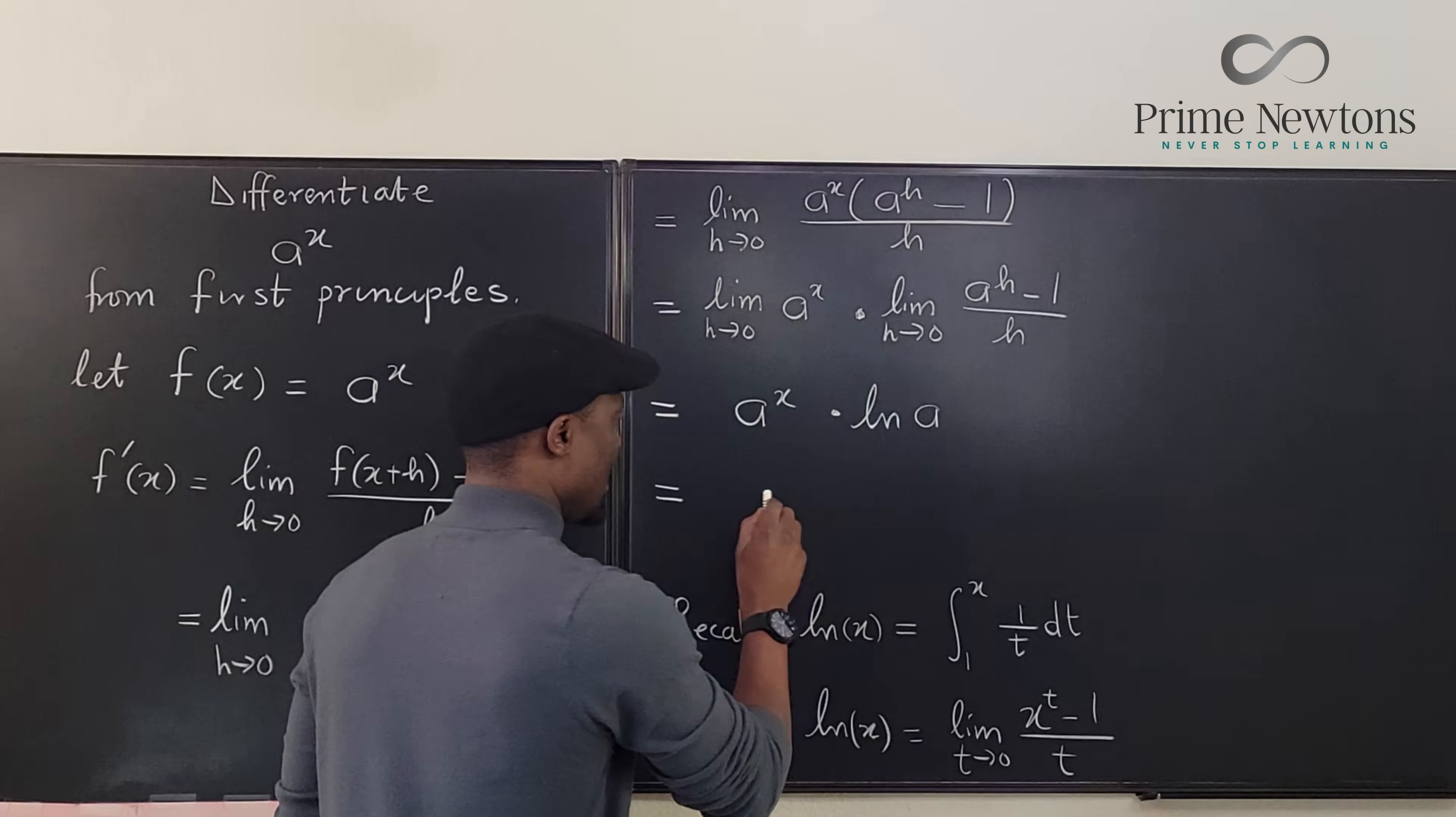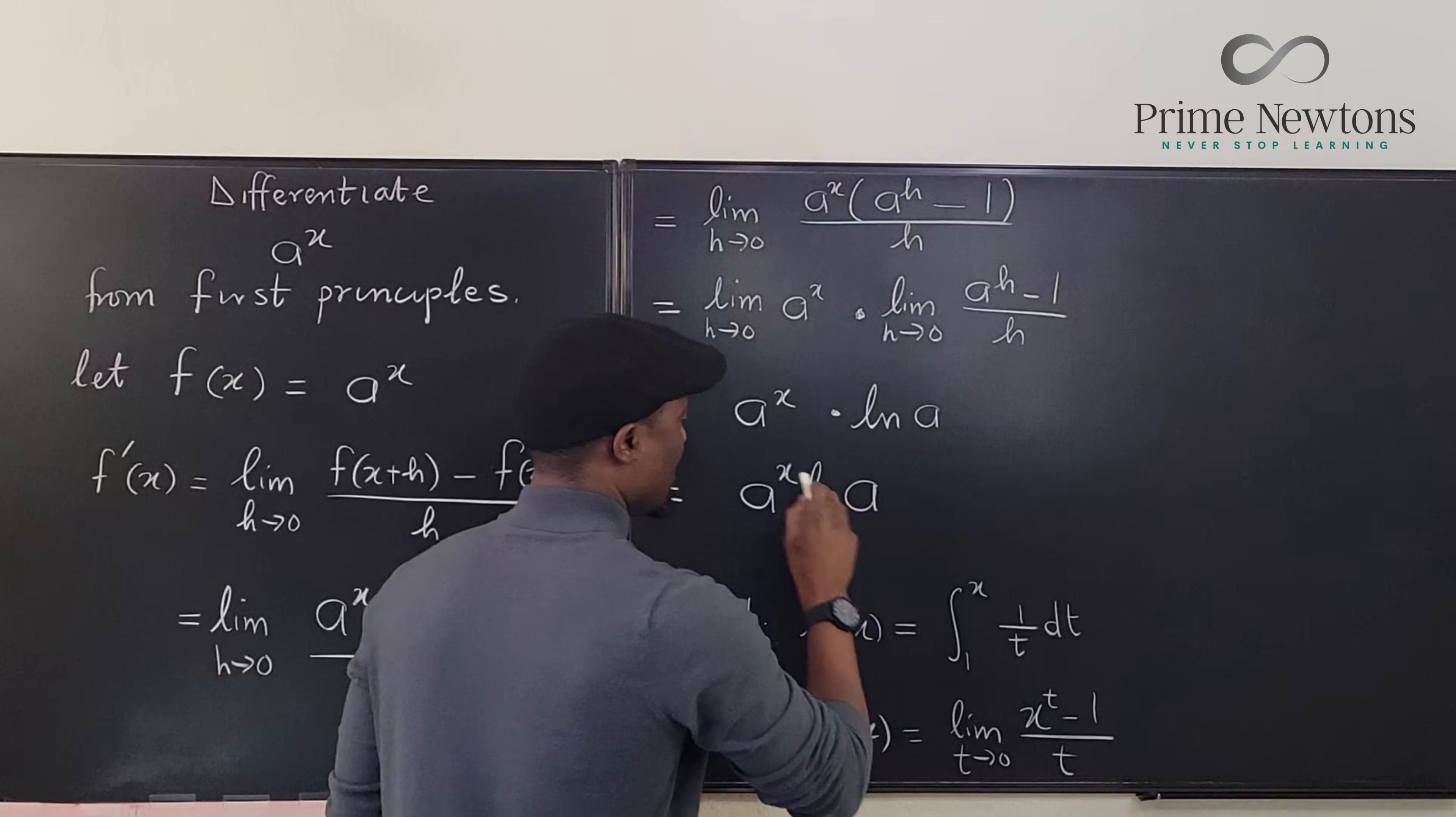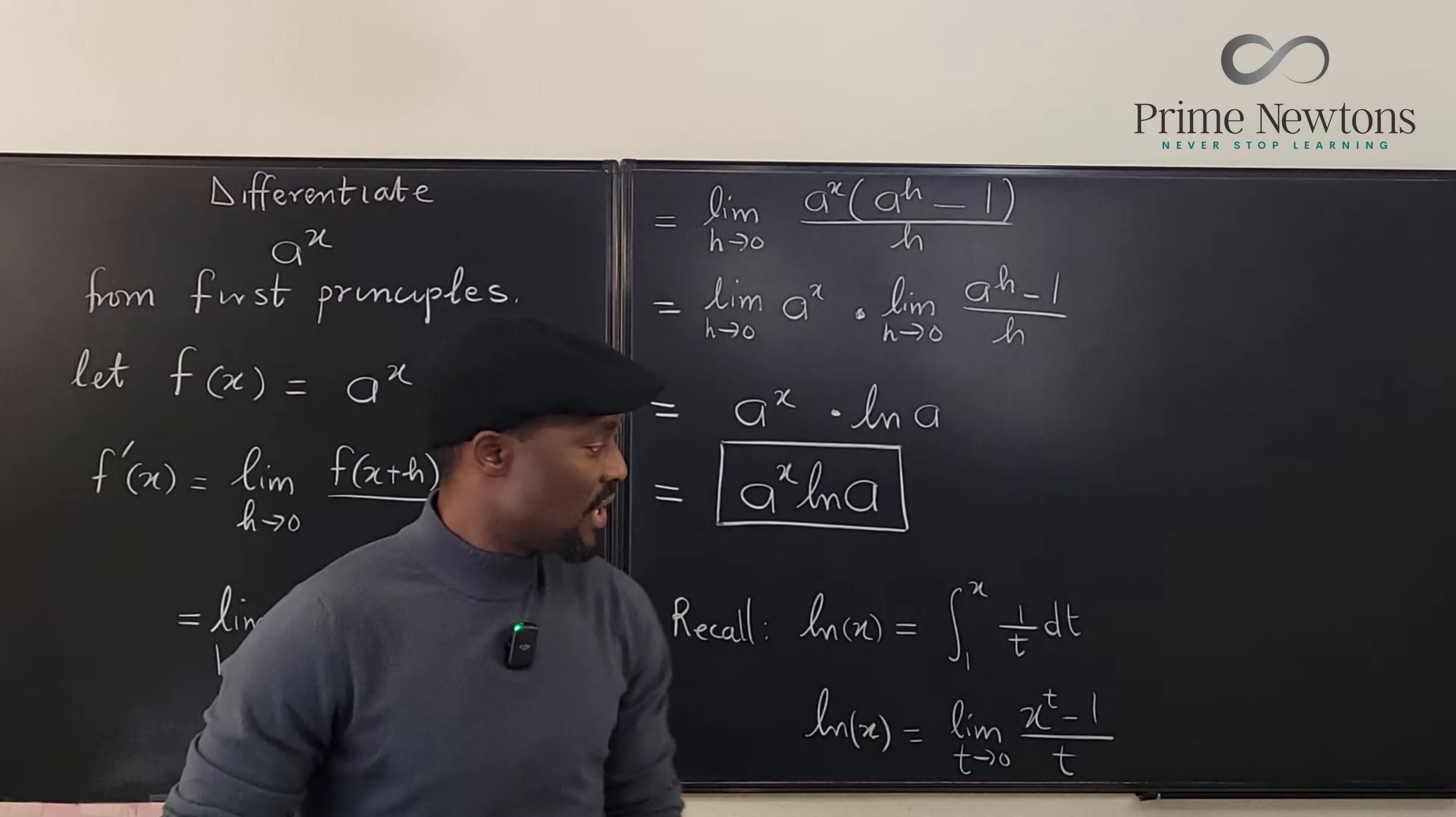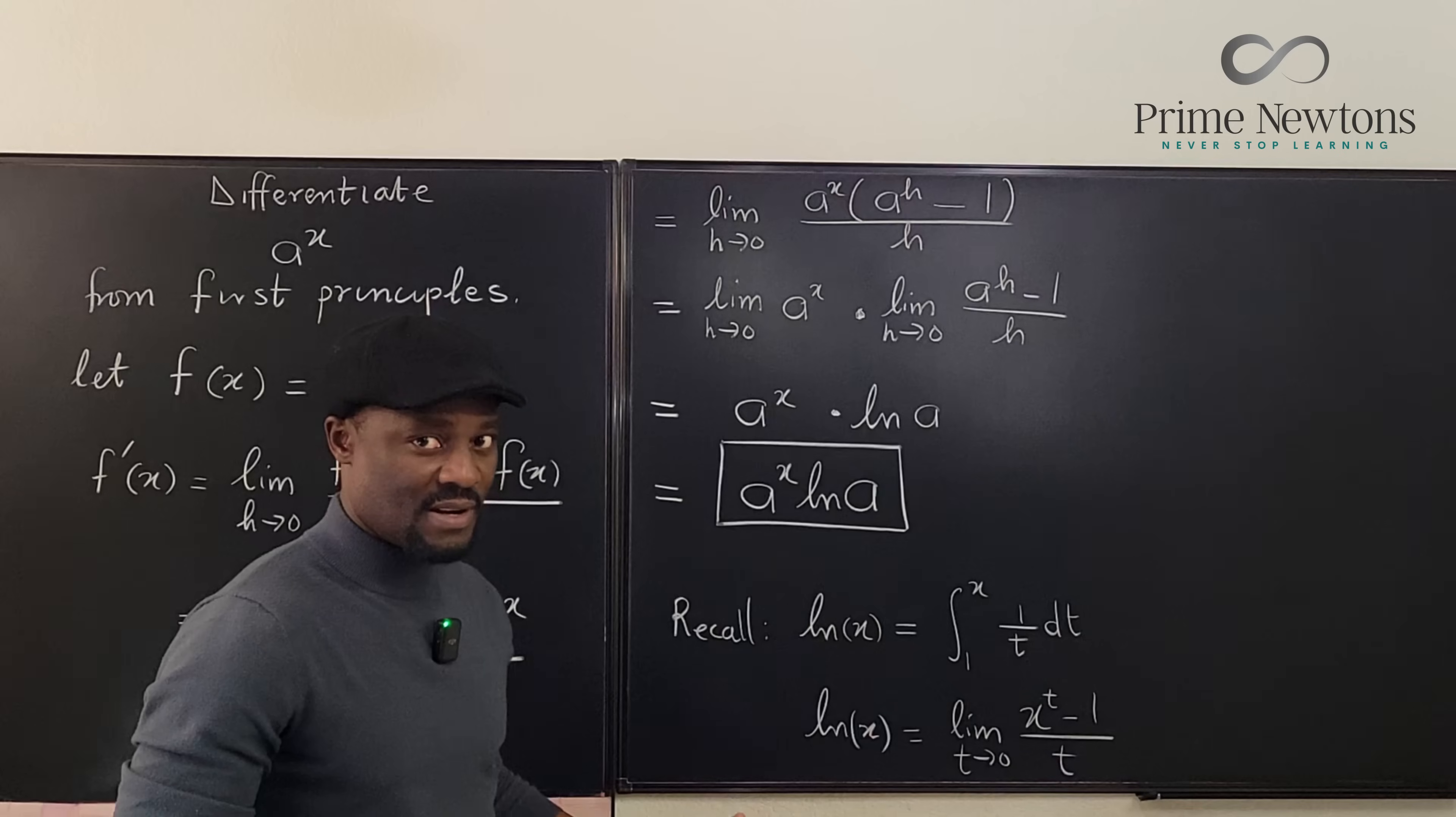So the final answer to this is a to the x ln of a. This is the derivative of a to the x from first principles using the definition of the natural log of x.